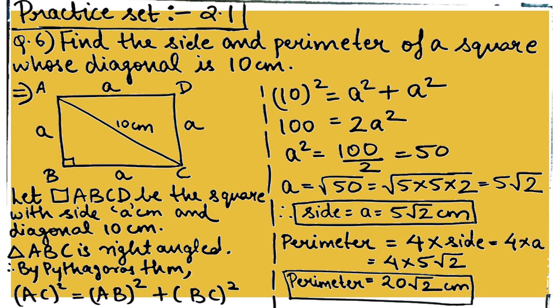Question 6: you have a square and need to find its side length and perimeter. The diagonal AC is given as 10 centimeters. Drawing a diagonal creates a right-angled triangle since all angles of a rectangle are right angles.